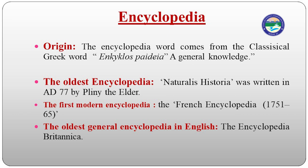Let's talk about the origin. The word 'encyclopedia' comes from the classical Greek word 'enkyklios paideia'. In this Greek word, 'enkyklios' means 'circle' or 'general,' and 'paideia' means 'knowledge.' So encyclopedia means a circle or general knowledge.